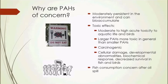Why are PAHs of concern? PAHs are considered moderately persistent in the environment and can bioaccumulate. They're known to have moderate to high acute toxicity to aquatic life and birds. In general, larger PAHs are more toxic than smaller PAHs, but the smaller PAHs are not without toxicity. They're known to be carcinogenic, can cause cellular damage, developmental abnormalities, and biochemical responses, as well as decreased survival in fish and birds. PAHs are a major concern in terms of fish consumption following a spill, and a fishery could be closed to protect people from eating contaminated fish.